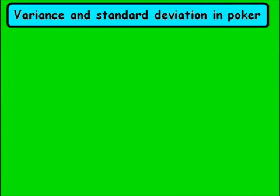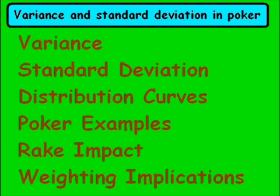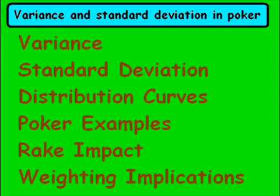Hi, this is Gary. You're watching a tutorial on variance and standard deviation in poker. In this segment, we're going to cover variance, standard deviation, distribution curves, and go through some poker examples of how to use it. We'll also look at the rake impact, as well as weighting and the implications of that. The examples we're going to use are from my book, Poker Hand Ranges Explained, for sale on Lulu. Let's go ahead and get started.